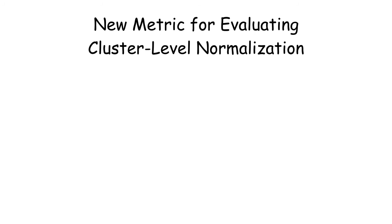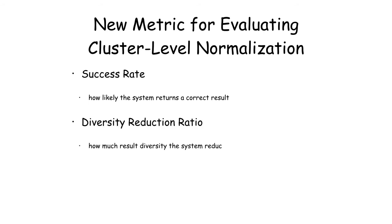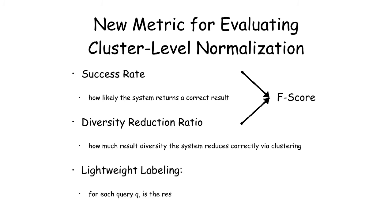To evaluate the performance of class-level normalization, we propose a new metric based on success rate, which measures how likely the system returns a correct result, and diversity reduction ratio, which measures how much result diversity the system correctly reduces through clustering. We then compute the F-score to measure the overall normalization quality. The labeling needed for computing this metric is lightweight — for each query, just label whether the system result is correct or not.